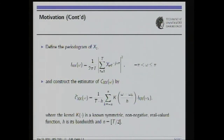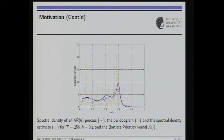The very first ideas about spectrum estimation are based on the periodogram, as Schuster introduced. The periodogram is simply the finite Fourier transform magnitude squared divided by the number of samples. To make it a stable estimator, you smooth over frequencies, or you can average data stretches as in the Welch spectrum. This is a smoothing operation of the periodogram over frequencies with a kernel function.